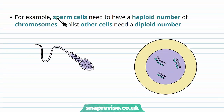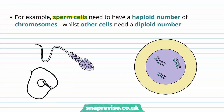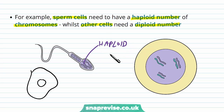Sperm cells are a very specialised type of cell. This is one single cell — a spermatozoa — and you can see how many specialisations it has adapted, looking very different from the basic cell diagram. Sperm cells have a haploid number of chromosomes — half that of diploid — whilst other body cells have a diploid number. So the sperm cell has haploid genetics, and when it fuses with an egg cell, it forms a full body cell.